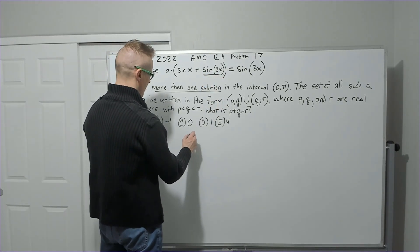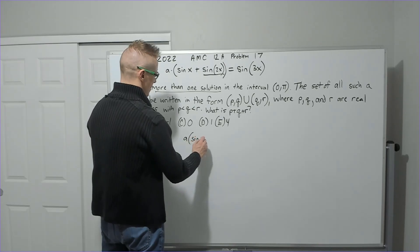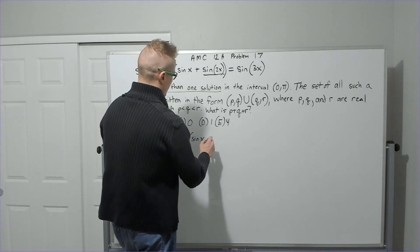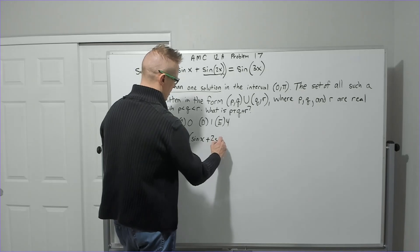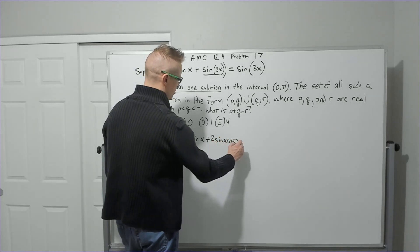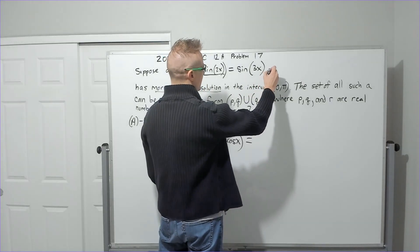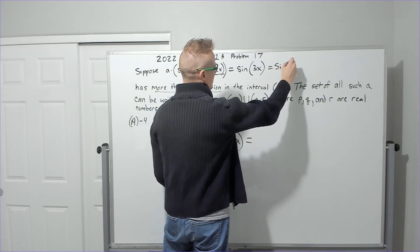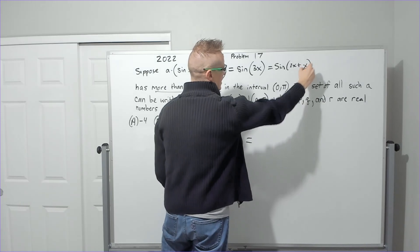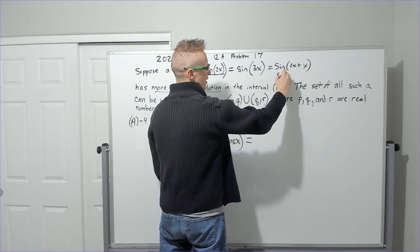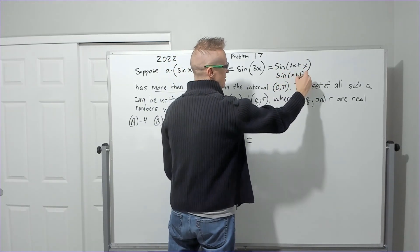So I'll do A times sine x plus 2 sine x cos of x, you should have that memorized, is going to equal, I'm going to think of this as the sine of 2x plus x. And then I'm going to utilize the sine of A plus B.